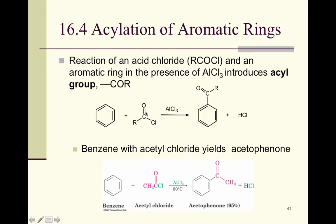Whatever R group you have on the acid chloride will remain. The catalyst is aluminum chloride. The C=O double bond and R group from the acid chloride stay intact — the attachment point is where the chlorine was — and HCl is the minor secondary product. A specific example uses acetyl chloride with AlCl3 and a little heat; chlorine is the leaving group, the carbonyl carbon is the attachment point, and with a single-carbon R group we get a CH3 group on the ring plus HCl.